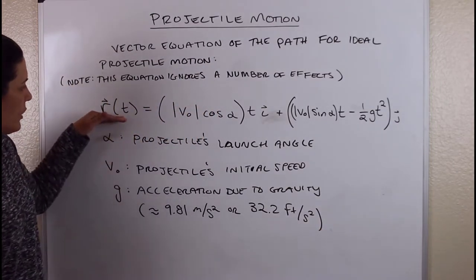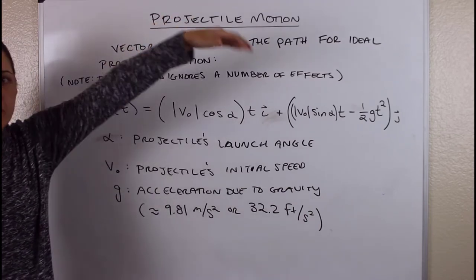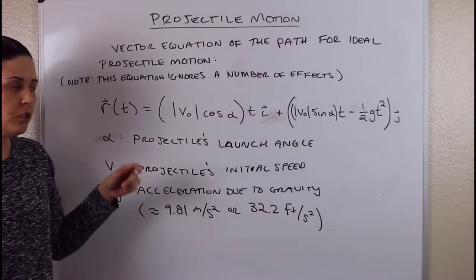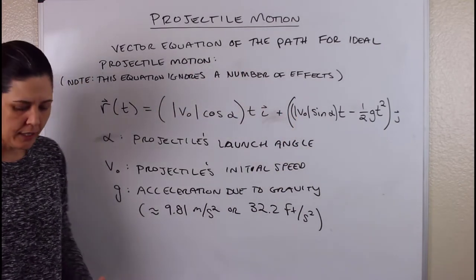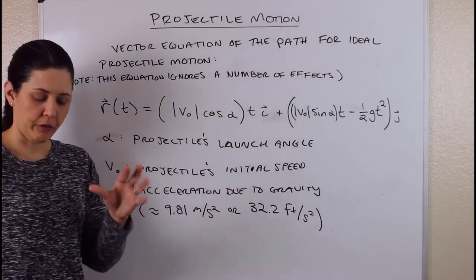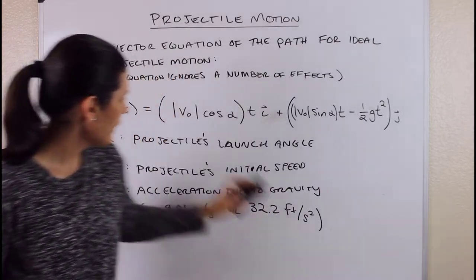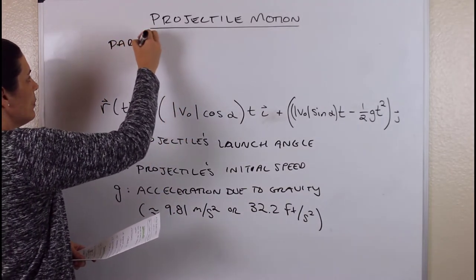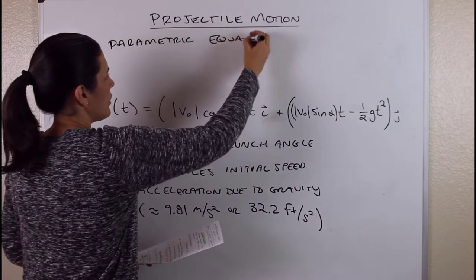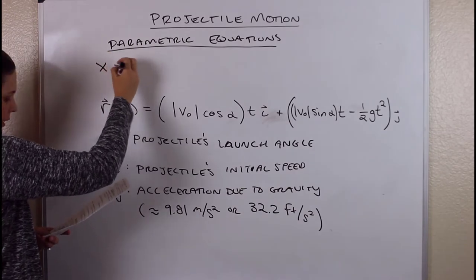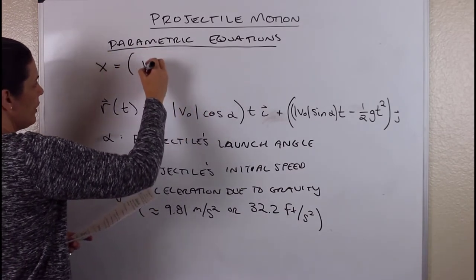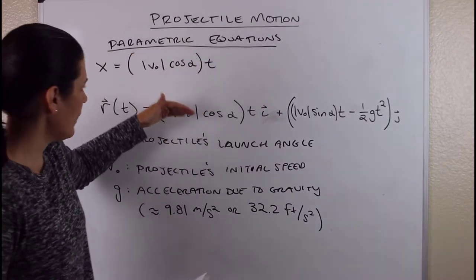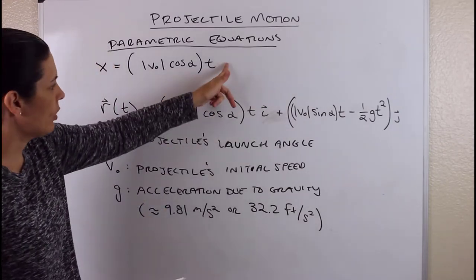So that's our position vector representing the path of some projectile, and the components that go into this equation. Let me break this apart into parametric equations, separating the i and j components from one another. So our parametric equations: x equals the magnitude of v naught times cosine alpha times t. Since I'm breaking it apart into the x and y components, notice I no longer write i and j.